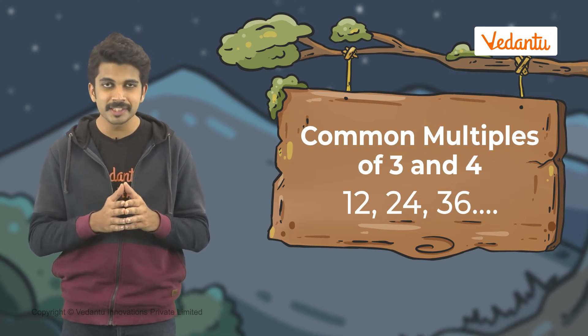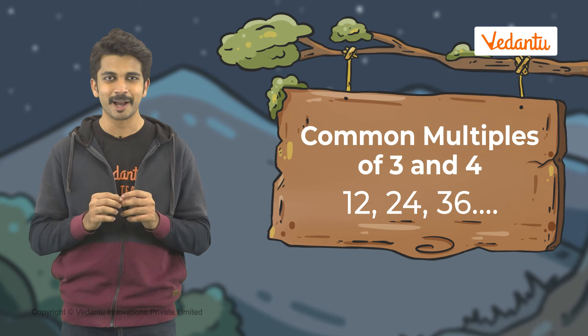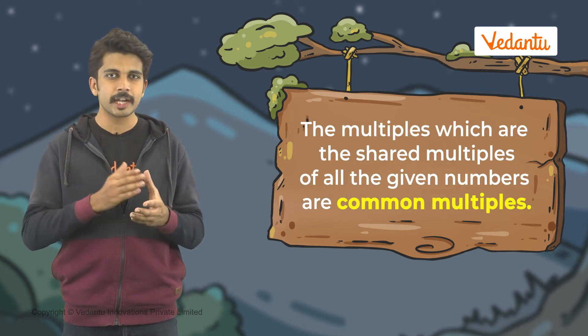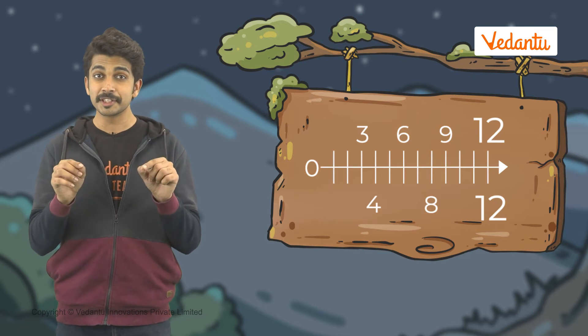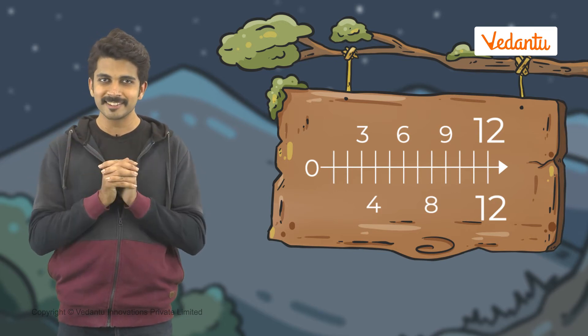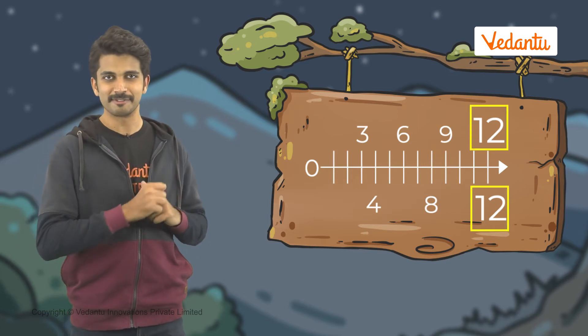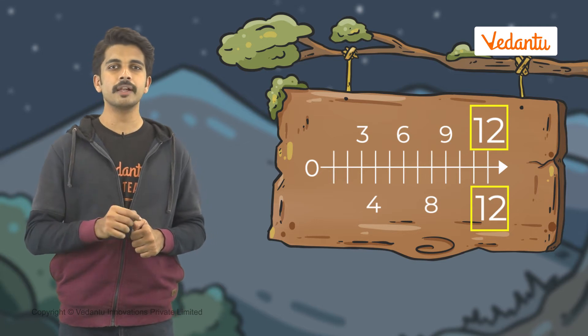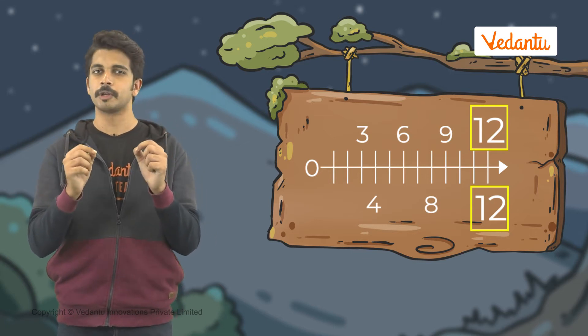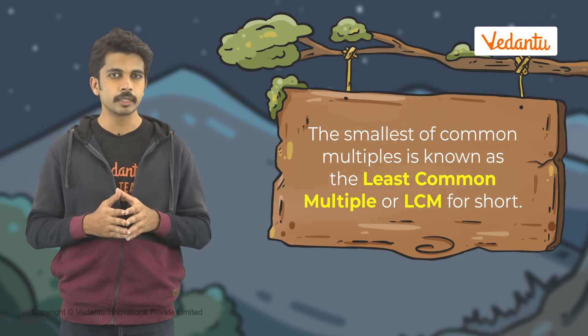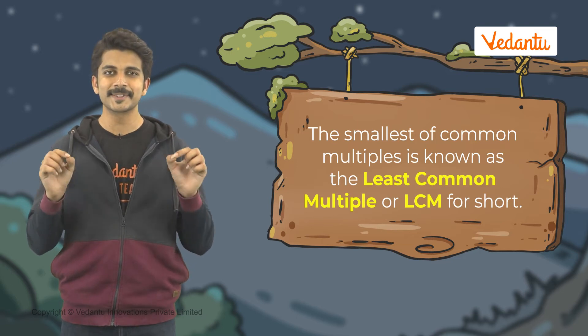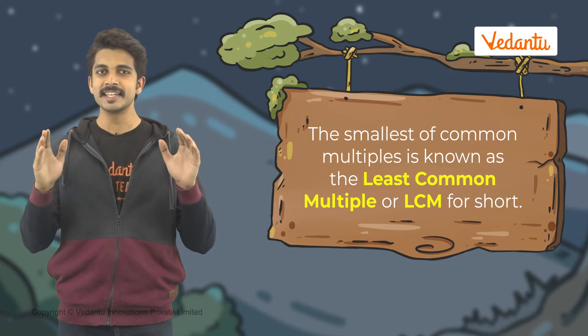It means that 12, 24, and 36 are multiples of both three and four. Such multiples are known as common multiples of given numbers — multiples which are the shared multiples of all given numbers. What if I ask you when is the first time that they blinked together? Going back to the multiples of three and four, that's 12. Here, 12 is the first and the smallest common multiple of three and four. This smallest common multiple is also known as the least common multiple, or LCM.